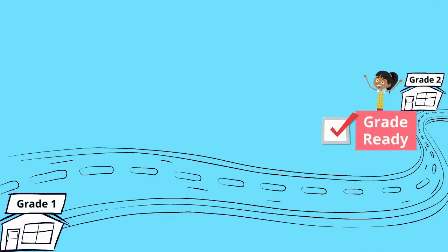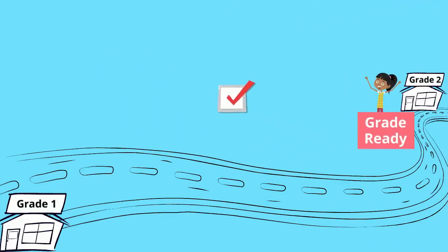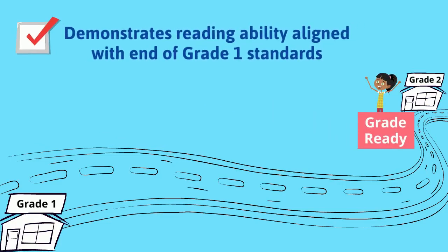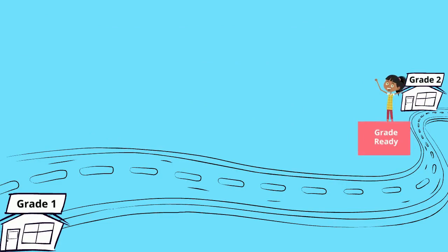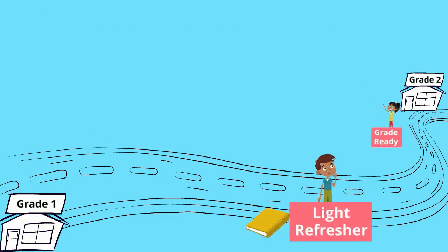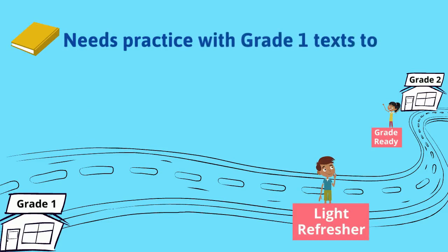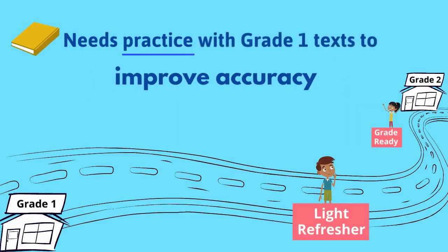A Grade 2 learner who is grade ready demonstrates reading abilities that are aligned with the end of Grade 1 standards. A Grade 2 learner who needs a light refresher will benefit from practicing reading Grade 1 texts to improve accuracy.